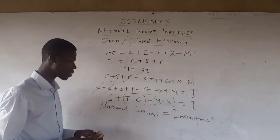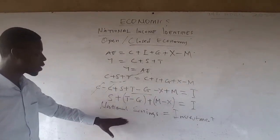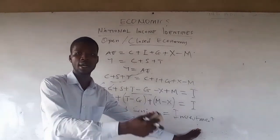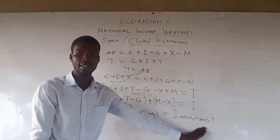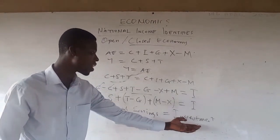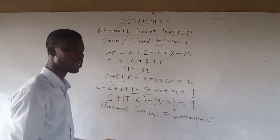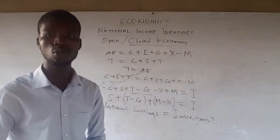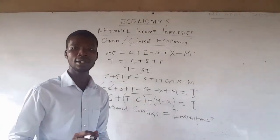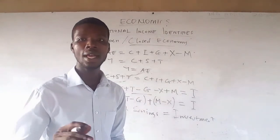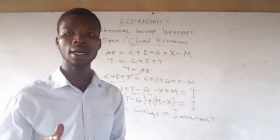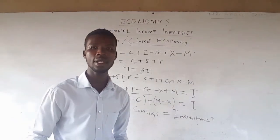What this means is that any time we save our money, we are investing it. When you put it in the bank, banks don't just keep it — they invest it. So no matter how you look at it, investment equals national savings. This is how to prove it using the identities. Don't forget to subscribe and send your comments through our email and WhatsApp numbers. Thank you for watching.